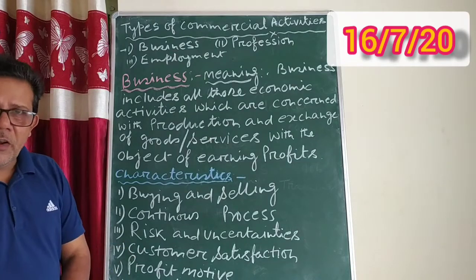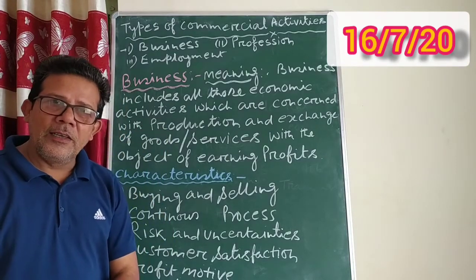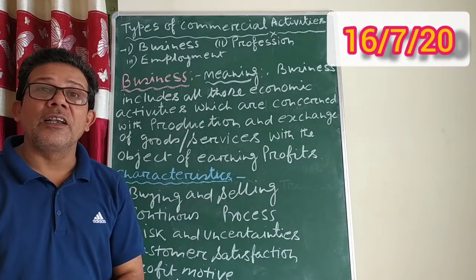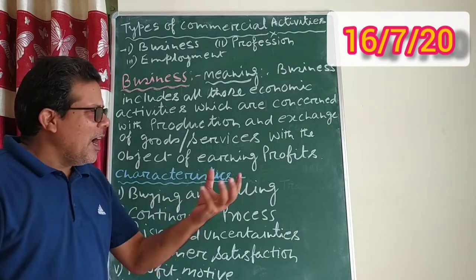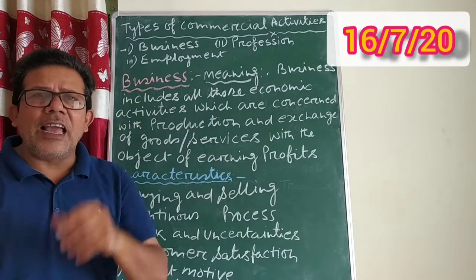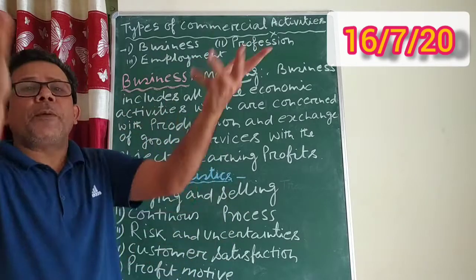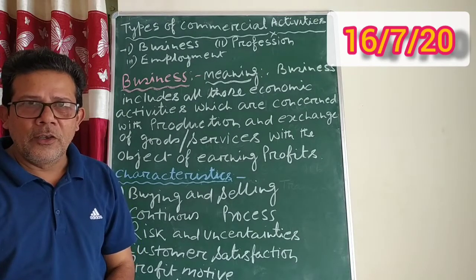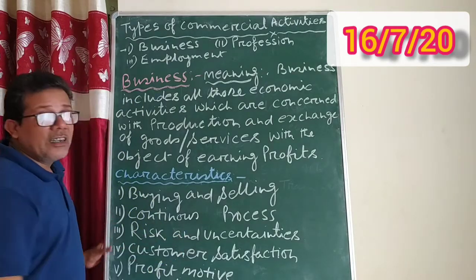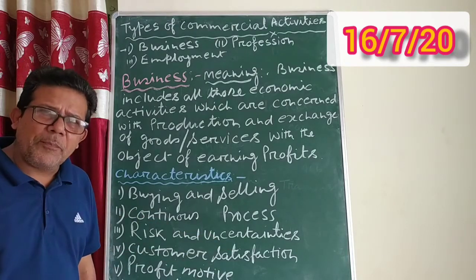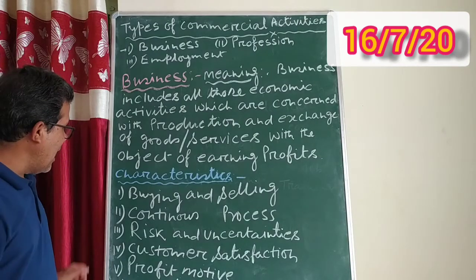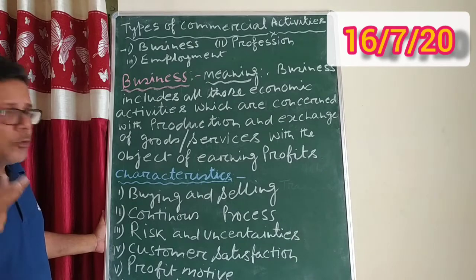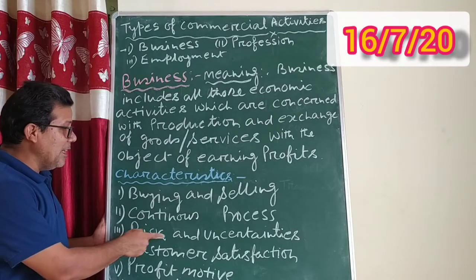The next characteristic is risk and uncertainty. In business, the liking and disliking of human beings are not certain. Today people may like a particular product and a business organization may produce a lot of it, but sometimes people are not ready to buy those things. Whether the customer will come or whether they will like the product is uncertain, and there is always risk involved.